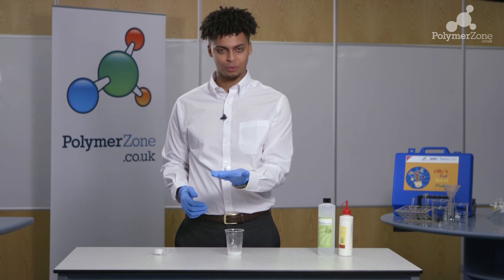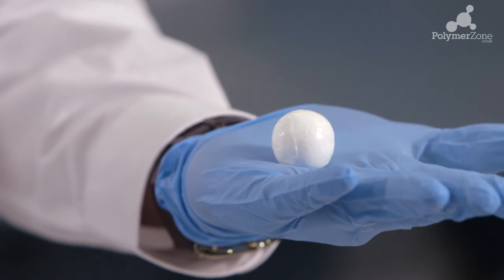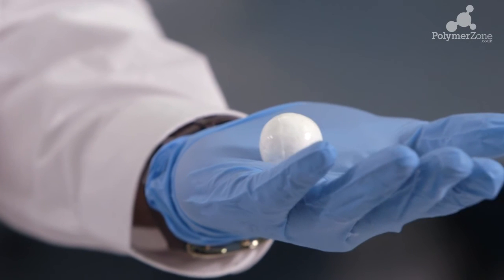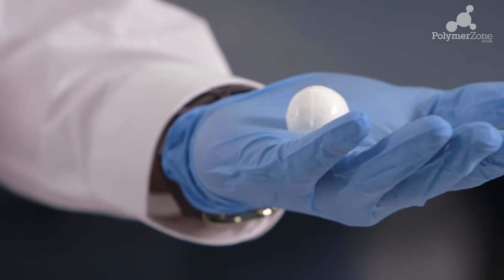Eventually you should end up with a round ball that's very soft and bouncy, and again I'd encourage you to get the kids to come up and interact with the materials so they can understand how the properties are very different to the two liquid starting materials.